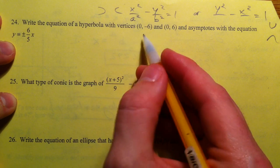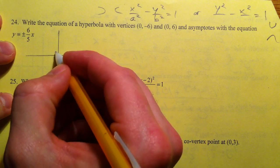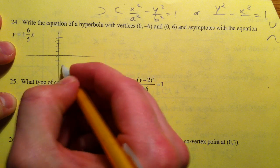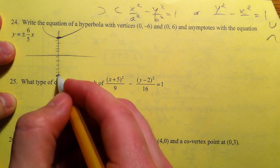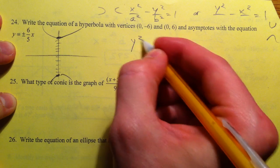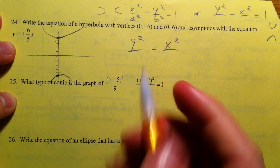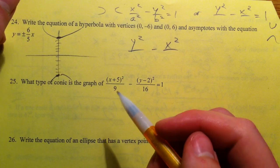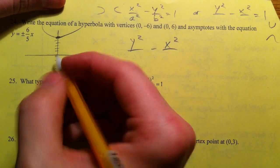So, write the equation of the hyperbola with vertices 0 negative 6, and 0, 6. So because those two points are up and down you know it's got to be a y squared minus x squared equation. And I didn't include x minus h in all that because it was centered at 0, 0.